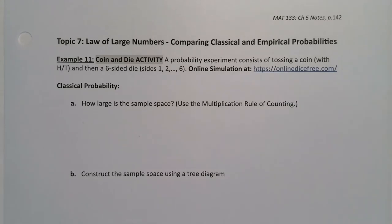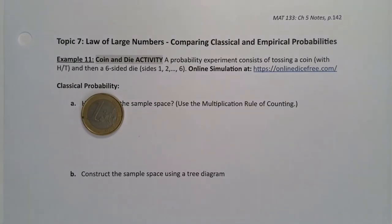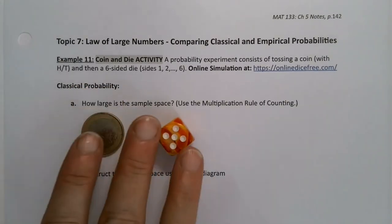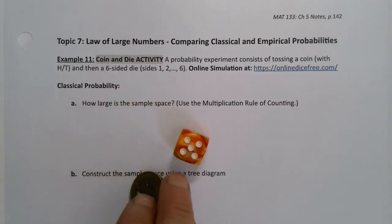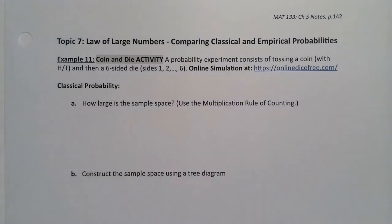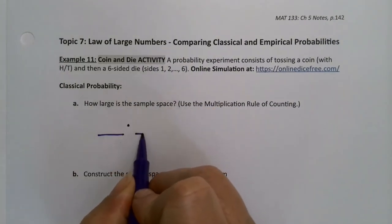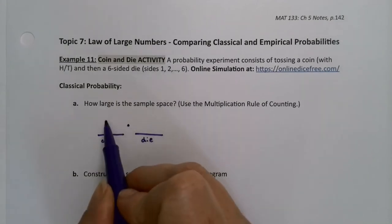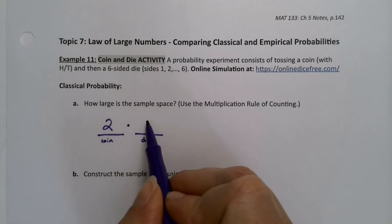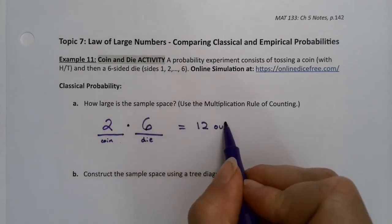We're going to imagine an experiment where we're tossing a coin and a six-sided die at the same time, or if you'd like, one before the other—it doesn't really make any difference. Now, the first thing we want to figure out is how large is the sample space? Well, let's see. For the coin times the die, for the coin there's two options, for the die there's six options, which means there's 12 outcomes total.